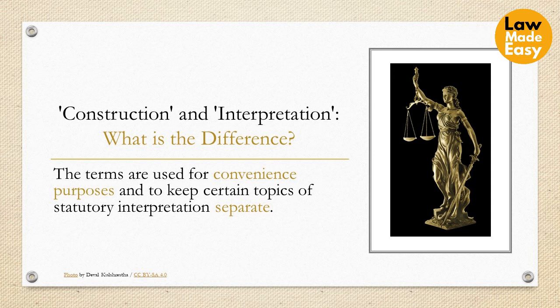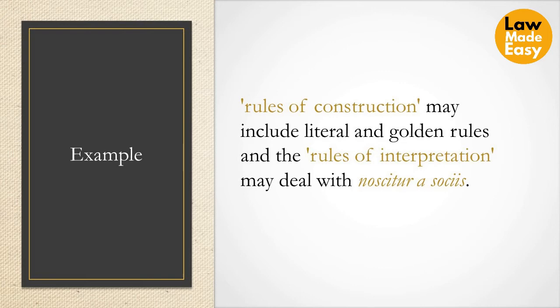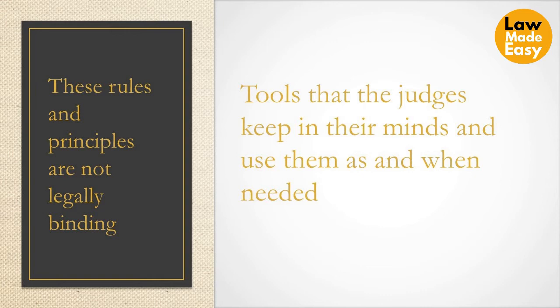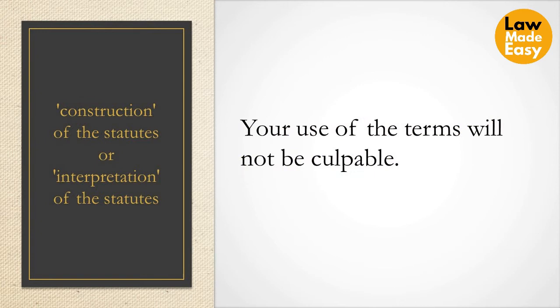Construction and interpretation — what is the difference? There is no difference between the words construction and interpretation as such. The terms are used for convenience to keep certain topics of statutory interpretation separate. For example, rules of construction may include the literal and golden rules, while rules of interpretation may deal with noscitur associiis or ejusdem generis. These rules and principles are not legally binding — they are rather like tools that judges keep in their minds and use as and when needed, at times without even referring to or mentioning those rules.